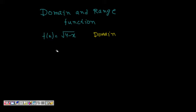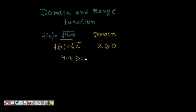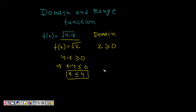For a square root function f(z) = √z, this is defined only if z ≥ 0. So in our case, f(x) = √(4-x) is defined if 4 minus x ≥ 0, which implies x ≤ 4. So the domain of f(x) is minus infinity to 4.